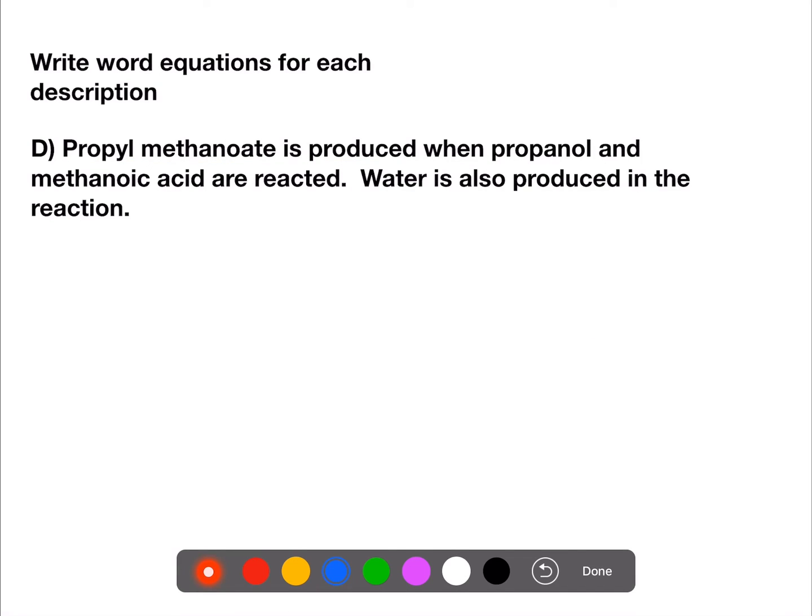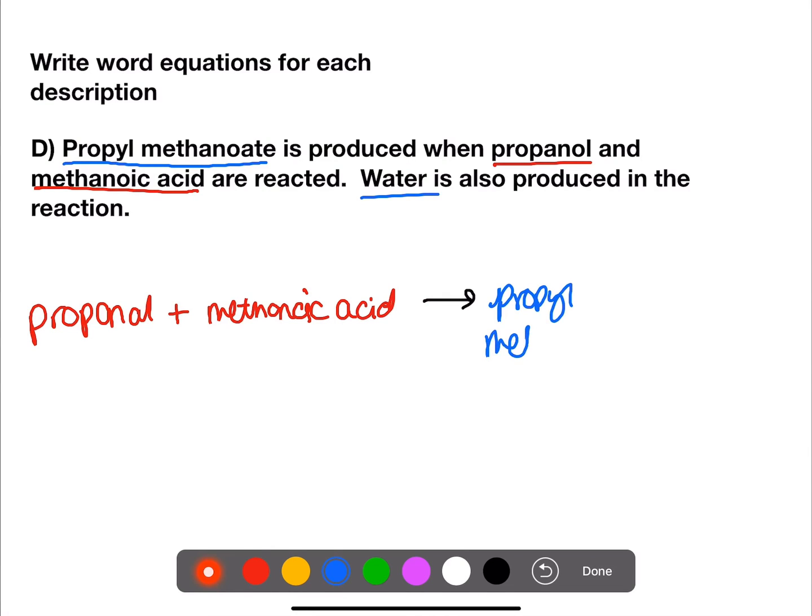Propyl methanoate is produced when propanol and methanoic acid are reacted. Water is also produced in the reaction. So propyl methanoate is one of the products. Propanol and methanoic acid are being reacted and water is also being produced. So our reactants are propanol and methanoic acid. Then we have an arrow. We have propyl methanoate as a product and water as a product also.